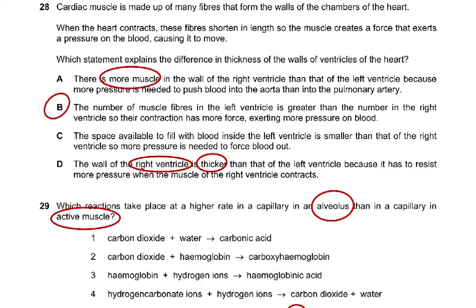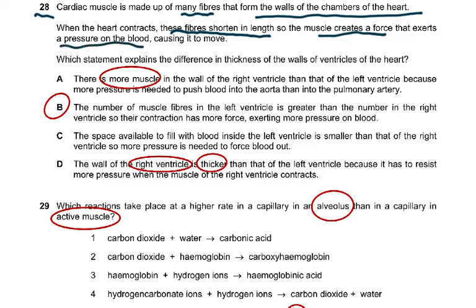Question 28: Cardiac muscle is made of many fibers that form the walls of the chambers of the heart. When the heart contracts, these fibers shorten in length so that the muscle creates a force that exerts a pressure on the blood, causing it to move. Which statement explains the difference in thickness of the walls of the ventricles of the heart? The left ventricle is thicker. Option A states there is more muscle in the wall of the right ventricle than the left, because more pressure is needed to push blood into the aorta than into the pulmonary artery — that's all wrong.